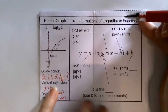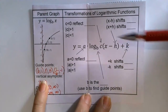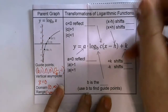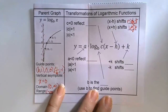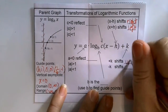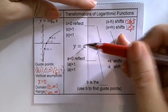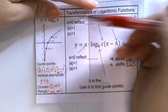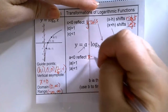Our transformations of logarithmic functions — the a, b, c, h, and k — each produce a different transformation on the function. The h and k are the rigid translations: x minus h shifts the graph to the right h units, x plus h shifts the graph to the left. A positive k shifts the graph up k units, and a negative k shifts it down. The a and c control reflections: if c is negative, that's a reflection over the y-axis; if a is negative, that's a reflection over the x-axis.